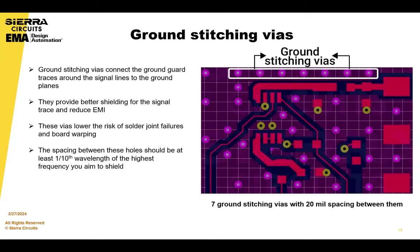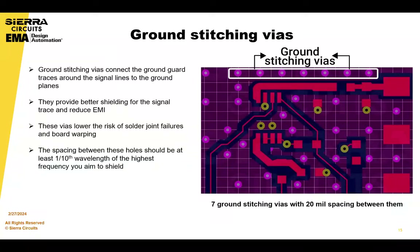Stitching vias also reduce the risk of board warpage, delamination, and other mechanical impacts. Ground stitching is great. The only downside is if you don't design it properly, you might not get the electrical effects you're looking for, but you will get the extra costs associated with ground stitching. So just be careful on the rules that you use.